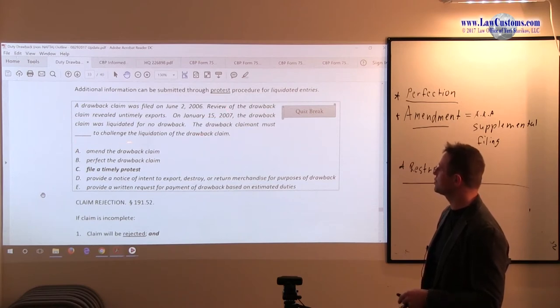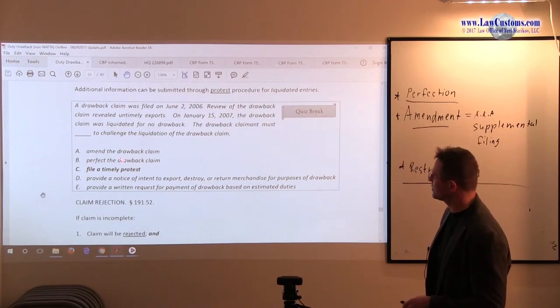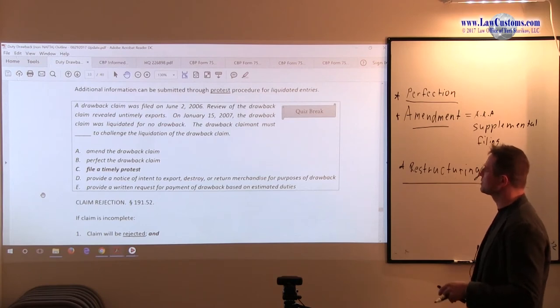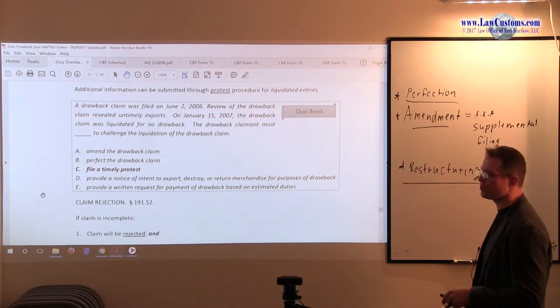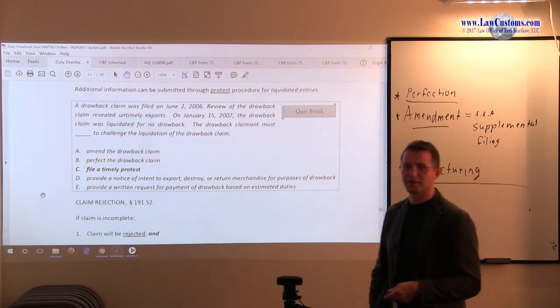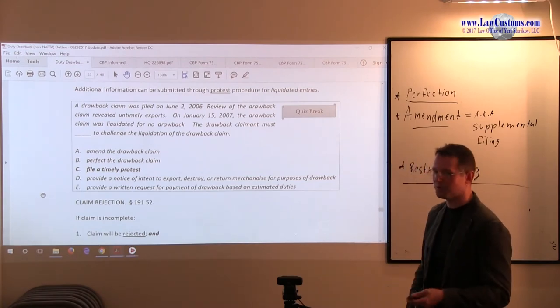The drawback claimant must challenge the liquidation of the drawback. So, amend the drawback claim? Well, since it's liquidated, this is no-go. Only the protest procedure is available. Perfection is only when customs comes back to you and asks you additional information. But customs decided not to go for additional information. They just liquidated without any refund. So no, that is not a situation of perfection.